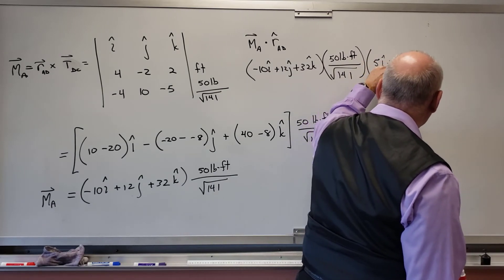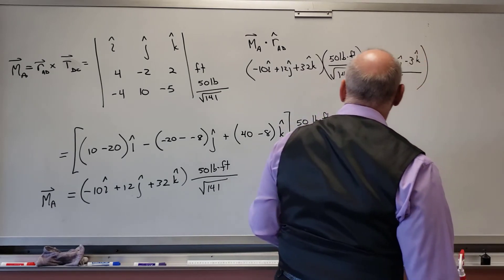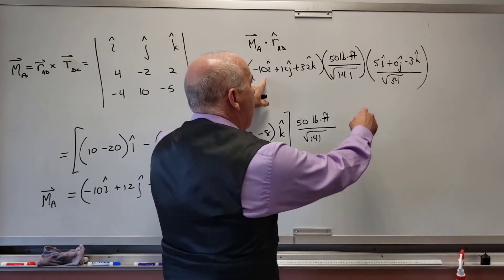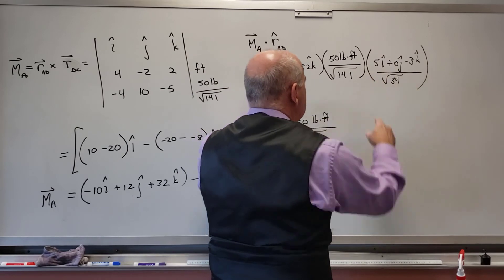So 5i plus 0j minus 3k over radical 34. No units. There's no units on that.